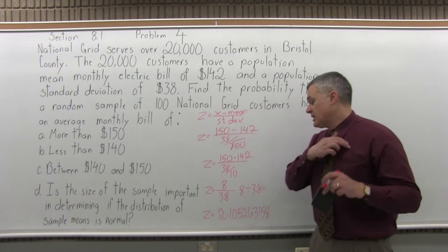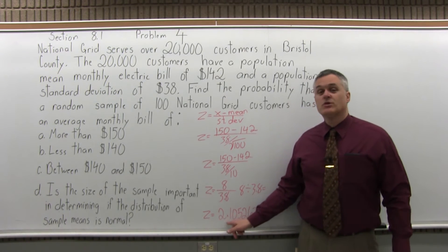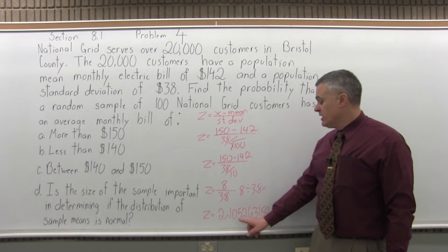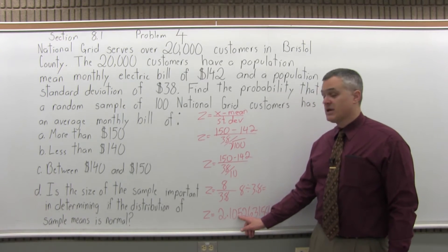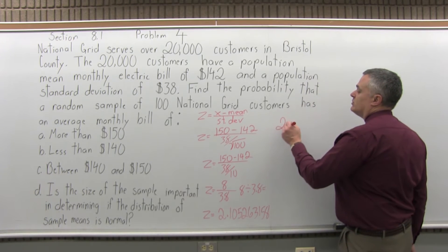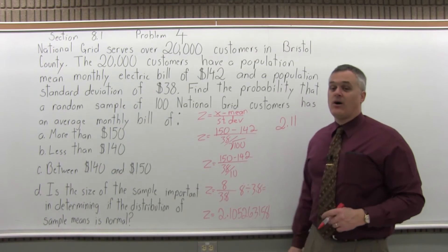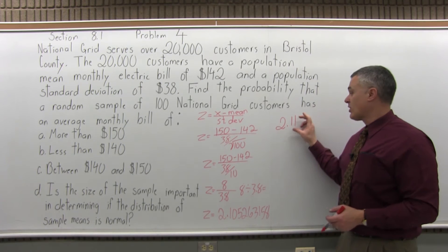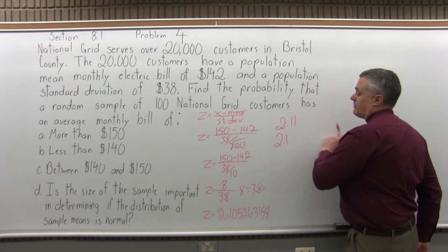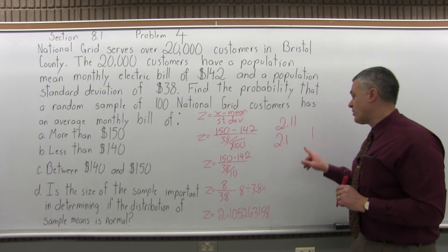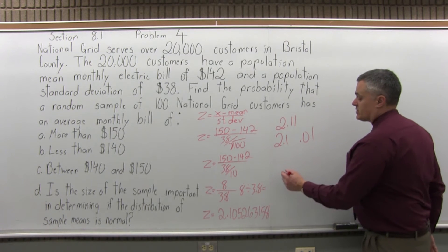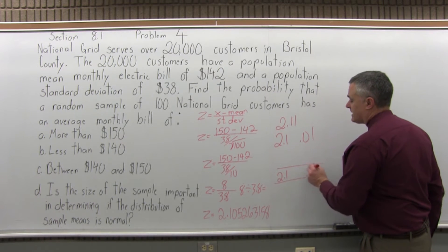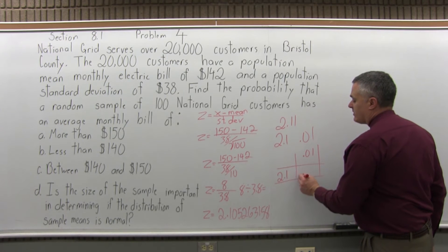To look up a Z-score in the standard normal chart, first write it to two decimal places: 2.11. Then split it into two parts by pulling off the rightmost digit — 2.1 and 1 — and put a .0 in front of the pulled-off digit to get .01. Go to the positive 2.1 row and intersect with the .01 column. They intersect at .9826.